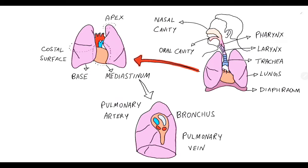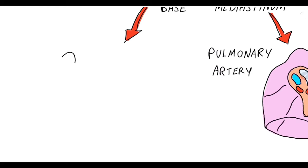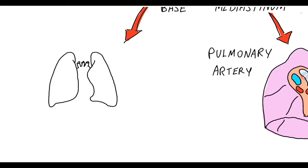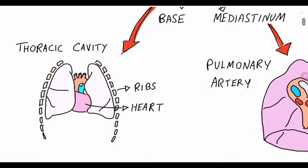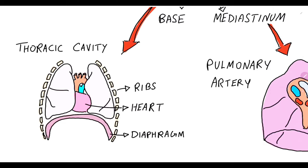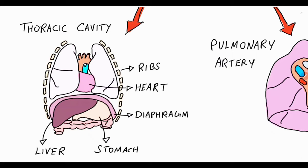Now let us take a closer look at the organs associated with the lungs and their relation. The lungs are present within the thoracic cavity and are protected by the ribs. Medial to the lungs is the heart along with the great arteries and veins present in the mediastinum. Inferior to the lungs is the diaphragm, stomach and the liver. Anterior to the lungs are ribs.